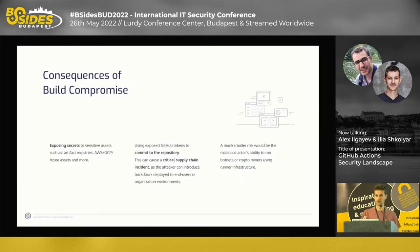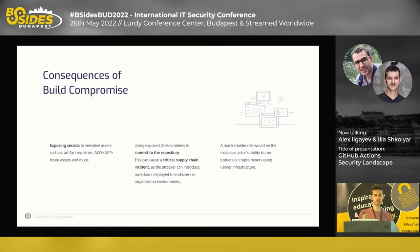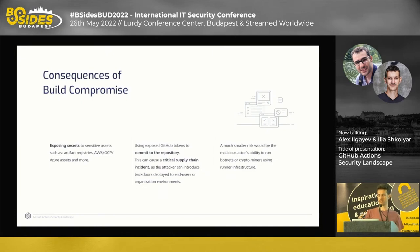What are the consequences of a build compromise? You can expose secrets — any meaningful CI/CD pipeline likely uses secrets, so once we have code running on the runner, we can use it to exfiltrate them. We can also use the GitHub token to commit to the repository — by default you have read-write permissions. An attacker can inject code into the repository that was never reviewed or approved, potentially creating critical supply chain incidents. A smaller risk is running botnets or crypto miners using runner infrastructure.